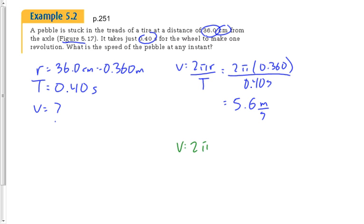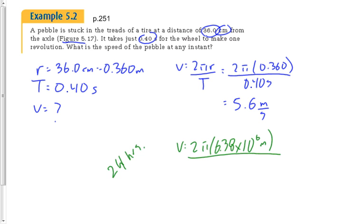The radius of the Earth is 6.38 × 10⁶ meters — you can check your data sheet. The period of Earth's rotation is 24 hours. Converting: 24 × 60 × 60 = 86,400 seconds. Before calculating, think about what you expect — are we going slow or fast? Then compute v = 2π × 6.38×10⁶ ÷ 86,400.